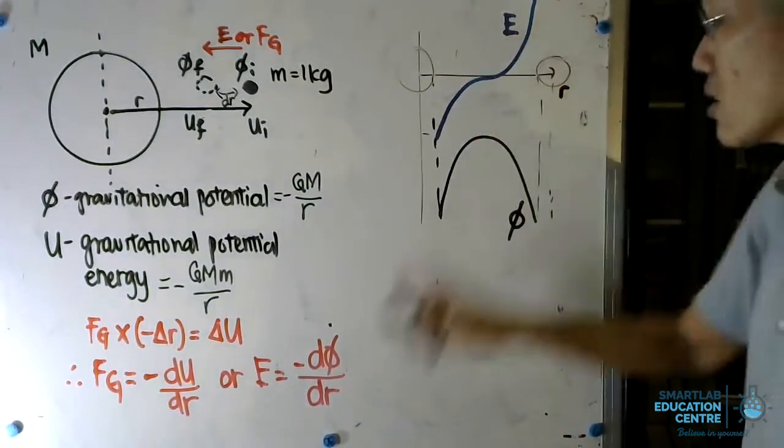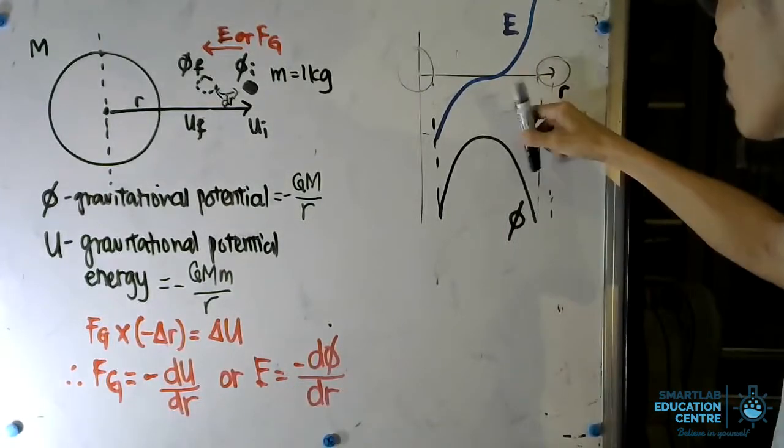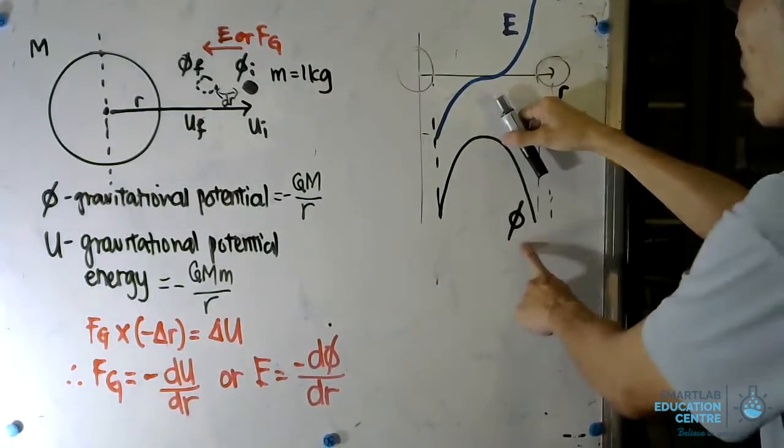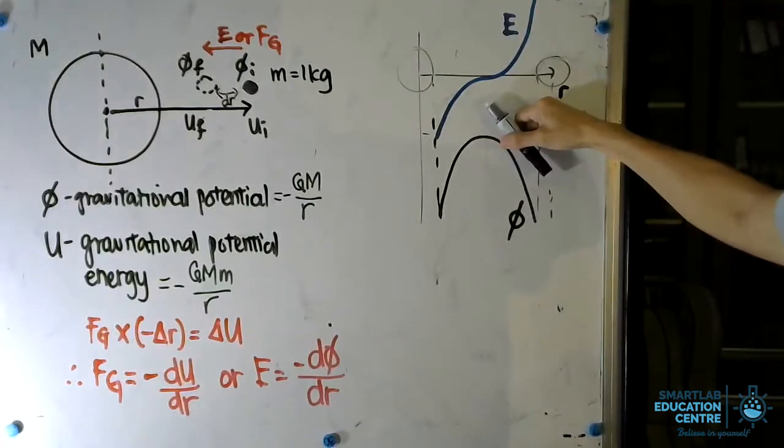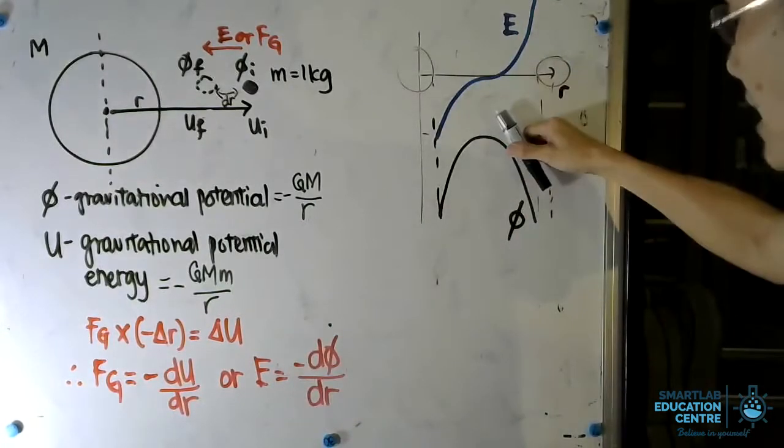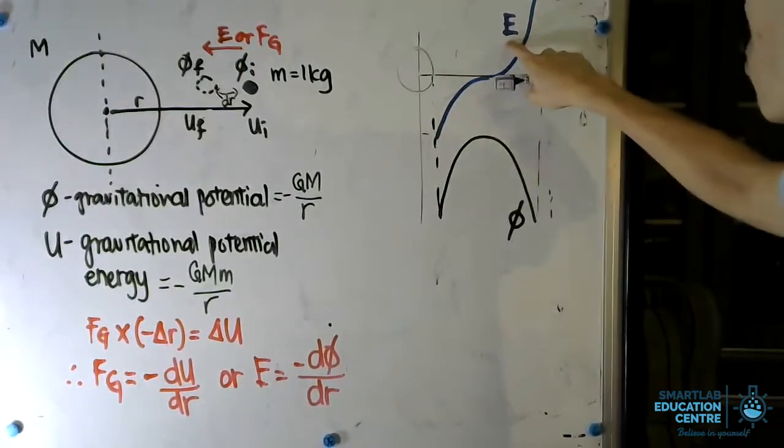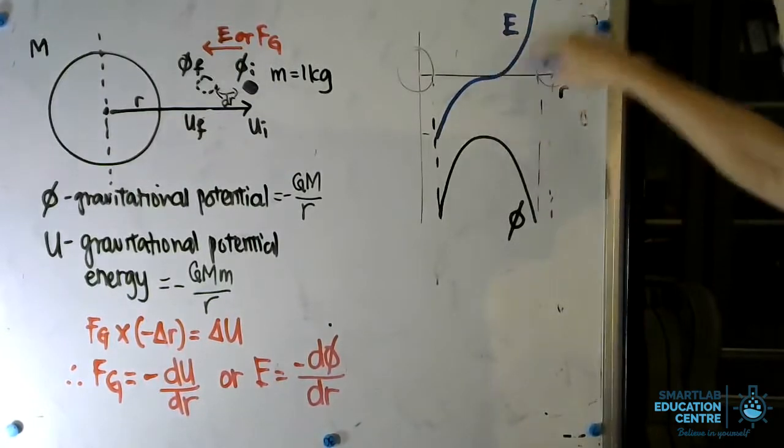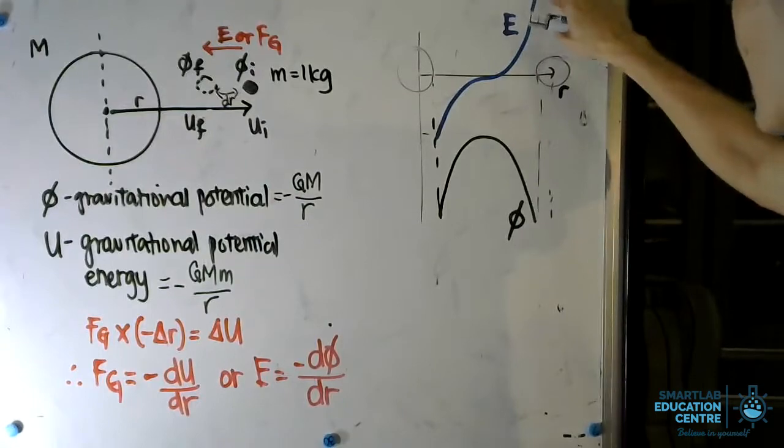At here, the gravitational field strength becomes positive because the gradient of the gravitational potential versus the R graph has now turned negative. The negative of a negative gradient is a positive value, so the gravitational field strength becomes positive and it is the steepest at this point here.